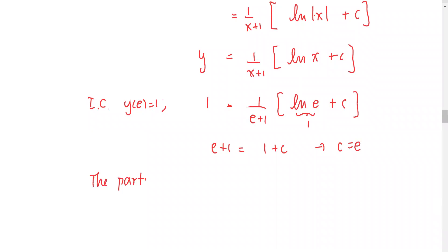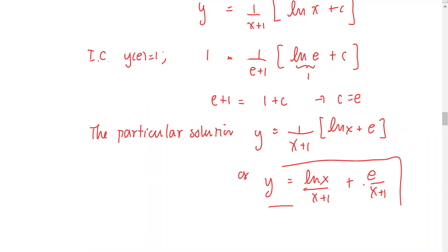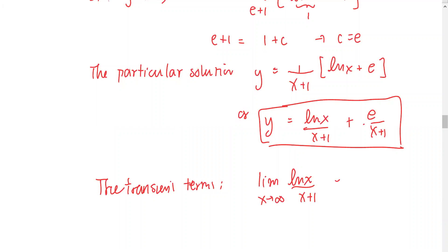That means the particular solution is y equals 1 over (x+1) times (natural log x plus e), or equivalently y equals (natural log x) over (x+1) plus e over (x+1). Next we consider the transient term. There are two terms: the limit of (natural log x) over (x+1) as x approaches infinity will be 0. We can use L'Hôpital's rule.